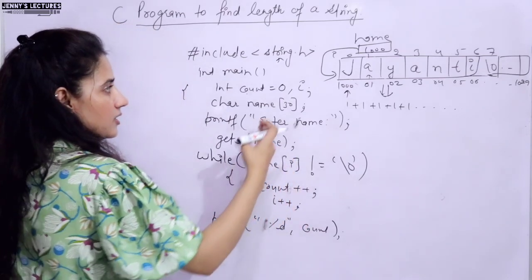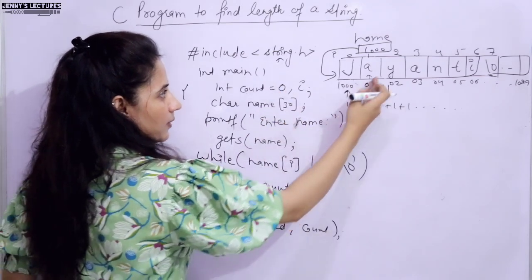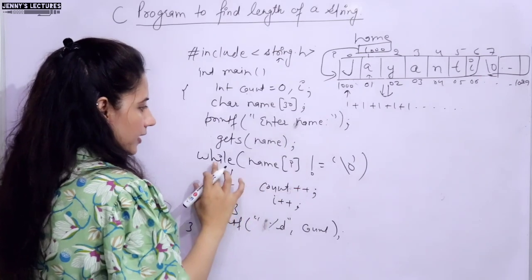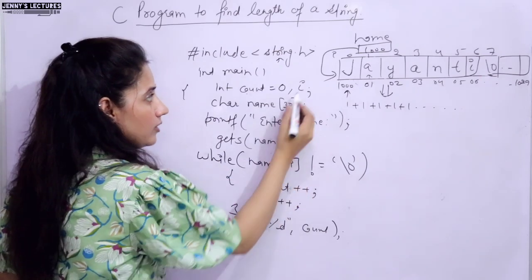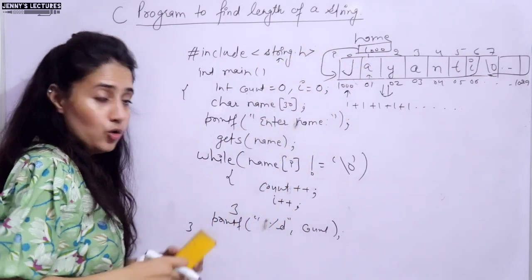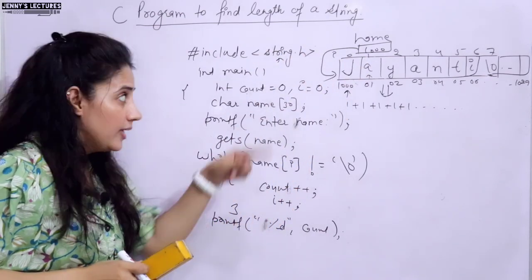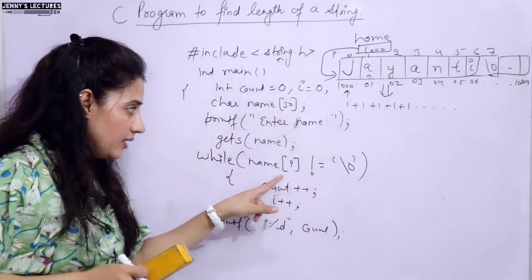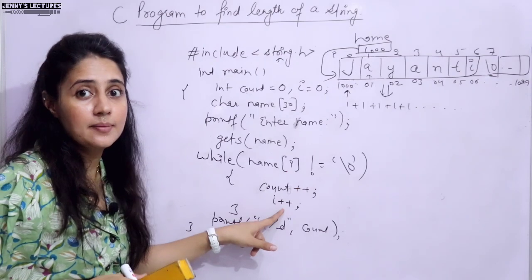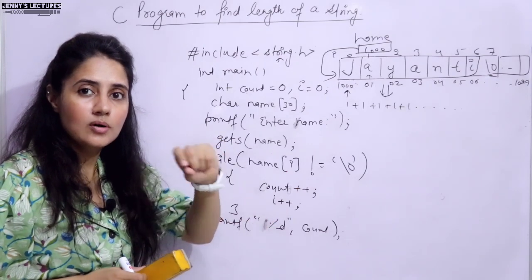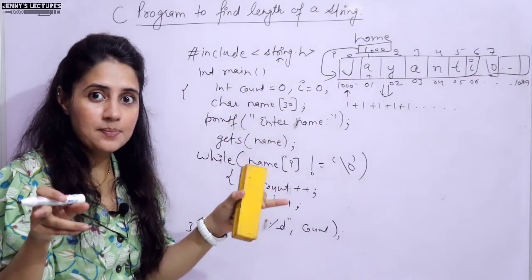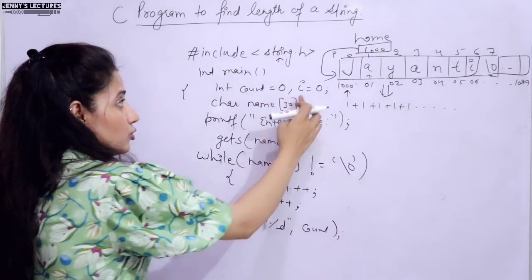Let's trace the working of this logic. Suppose the program asks 'enter name' and we enter 'Jainti'. Gets stores 'Jainti'. Now the while loop starts - i is initialized to 0, count is 0. We check name[0], which is 'J'. Is J equal to null character? No - the condition is true, we enter the loop. count++ makes count 1, i++ makes i 1.